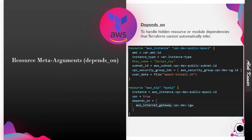Sometimes Terraform cannot automatically infer the dependency between resources. There are hidden types of dependencies that need to be declared in a declarative way. For example, suppose you want to create an Elastic IP that will be associated with an instance. That instance should lie in a public subnet, and that subnet will have a route table which has an internet gateway — so the internet gateway needs to be created first.